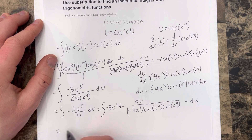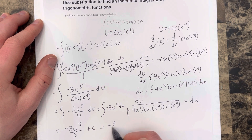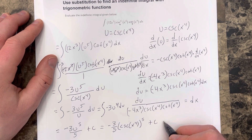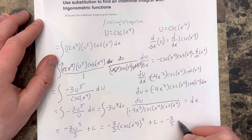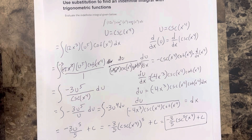Taking the antiderivative, I get negative 3 times u to the fifth over 5, plus c, which is negative 3 fifths. Re-substituting u as cosecant x to the fourth to the fifth power, the final answer is negative 3 fifths cosecant to the fifth x to the fourth, plus c. And that is our solution to the indefinite integral.